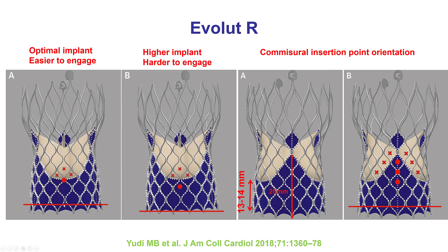This is an example of a regular implantation and a high implantation. The higher the implantation, the harder it is to engage the coronary arteries, because the arteries can be below the sealing skirt of the valve. Also, if the commissural post lines up with the coronary ostia, that makes it much harder to engage, because then one has to go through a cell that is adjacent to the commissural posts.